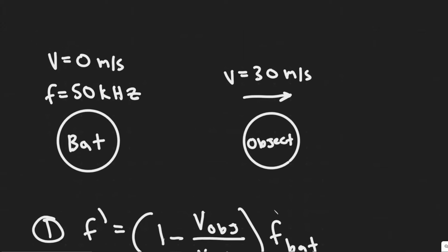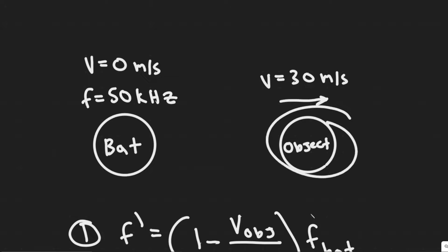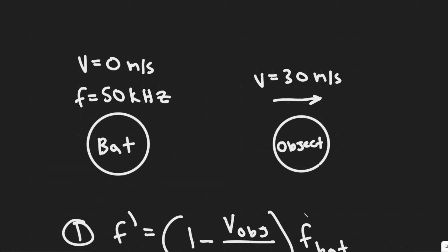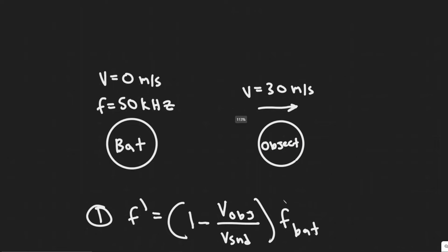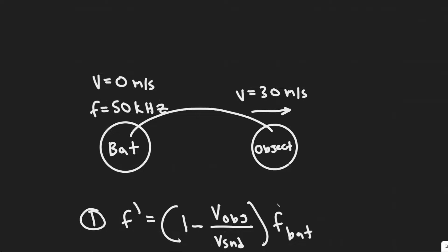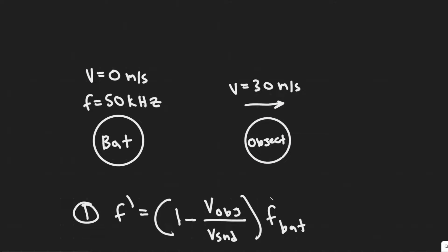What we're trying to find is: the bat sends out the frequency, and this object is going to detect that frequency — it's going to be a smaller value than this because it's moving away, because of the Doppler effect. Then essentially it's going to send the frequency back, and we're trying to determine what frequency the bat is going to detect. So the frequency is interpreted by this object first, and then the bat reinterprets the frequency from that object.